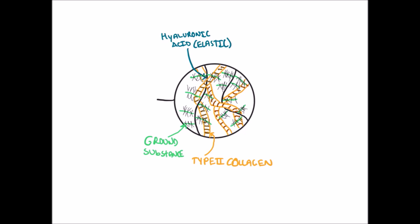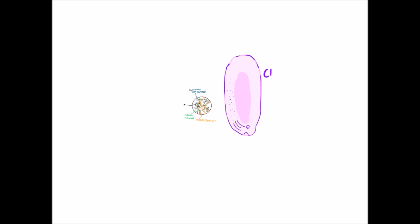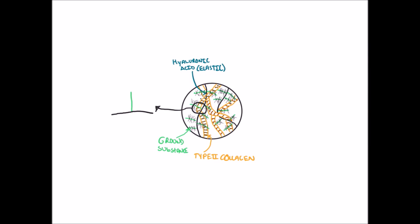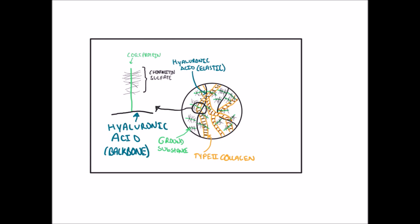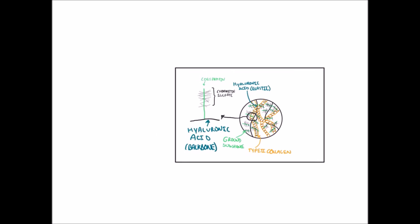The matrix is produced by fibroblast-like cells called chondroblasts. The ground substance is made of hyaluronic acid, a non-sulfated glycosaminoglycan that forms the backbone which the chondroitin sulfate is bound to via a core protein. Of note, the chondroitin sulfate is a sulfated glycosaminoglycan that gives the PAS stain.